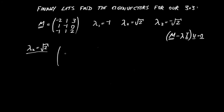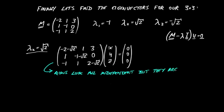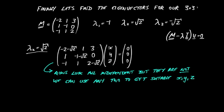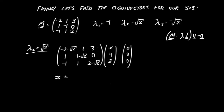As usual, we subtract square root 2 down the diagonal: minus 2 minus root 2, 1, 3, 1, minus 1 minus root 2, 0, minus 1, 1, 2 minus root 2 — multiplied by x, y, z equals 0, 0, 0. The rows all look different, but if we examine them carefully we'd find we could generate one row from the other two, so we only need two of them. The middle row has a 0, so I'll start with that: x plus minus 2 minus root 2 times y equals 0.